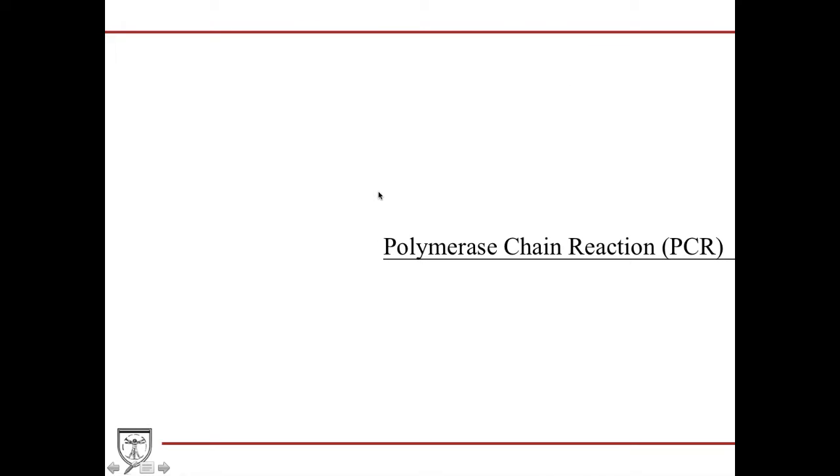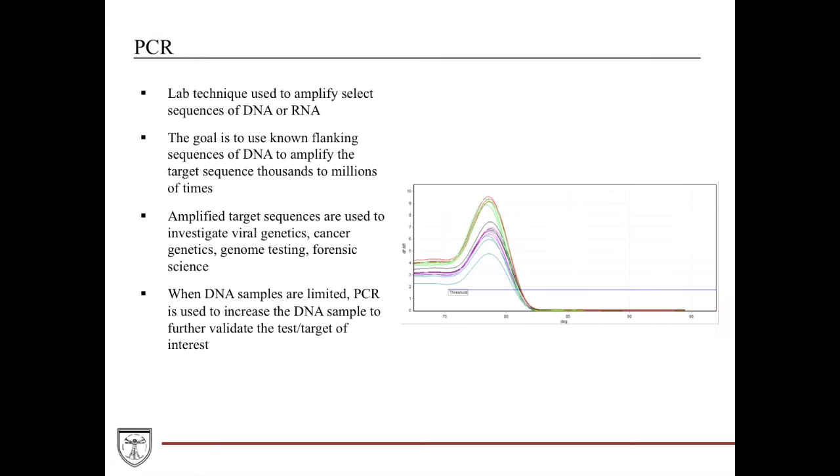Now we're going to discuss the polymerase chain reaction, PCR. PCR is one of those big game-changers in a lot of different aspects in medicine and biochemistry. It's really used to pretty much only study DNA and RNA sequences. It exploits the concept of using known flanking sequences to figure out and amplify your target even to the thousands to the millions of times interest. It has a lot of variety of functions. It can be used in viral genetics, studies in cancer genetics, genome testing, and even very interesting in forensic science has been a really big role for this.